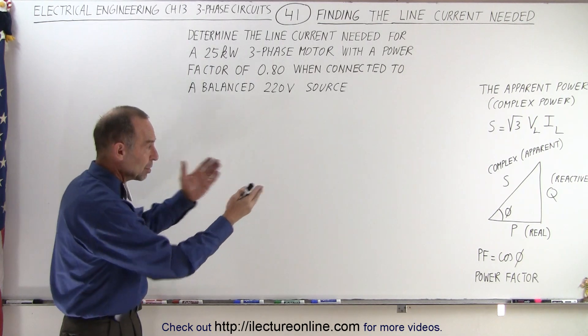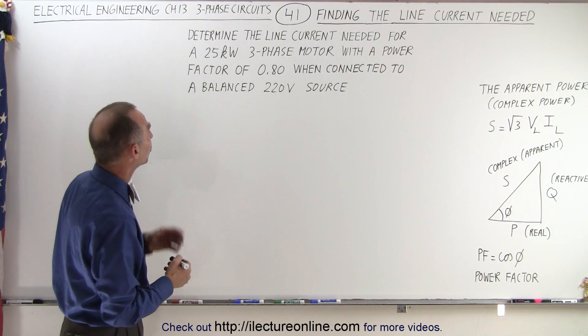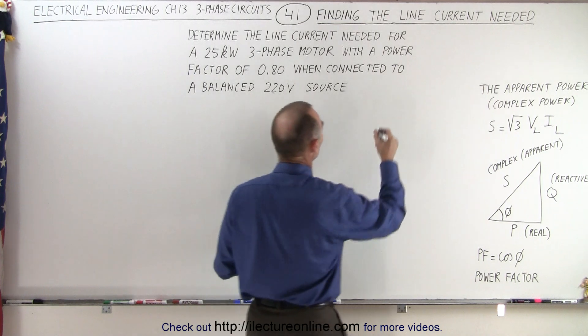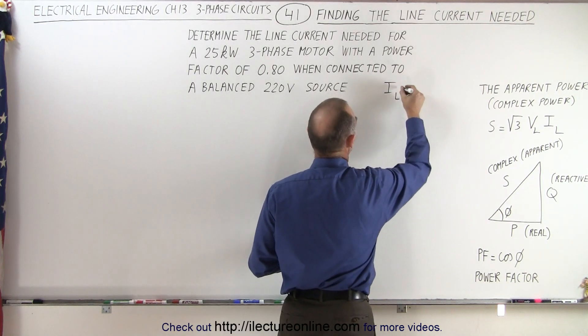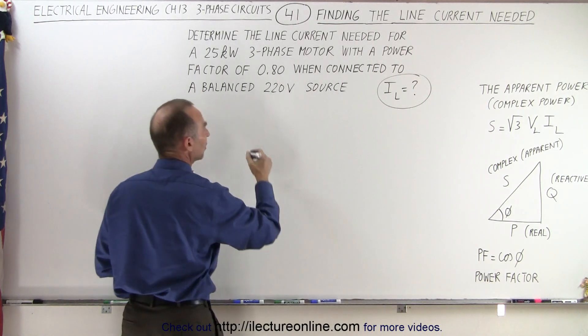We look at the triangle and see what is needed. In this case, we're trying to find the line current, so I_L is what we're looking for. We go to this equation right here.